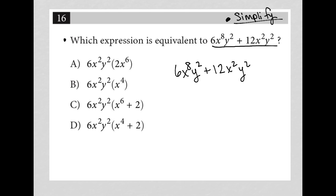The first rules of simplification always have to do with finding a common factor, especially if there aren't any like terms to add together. So if you have a binomial, trinomial, or any type of polynomial where there aren't any common terms, you want to see: how do I factor that?